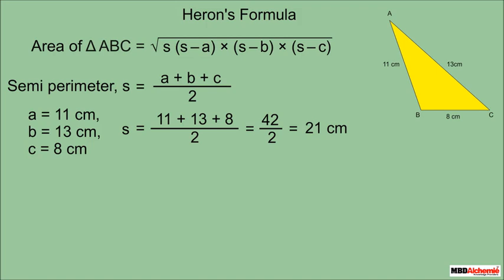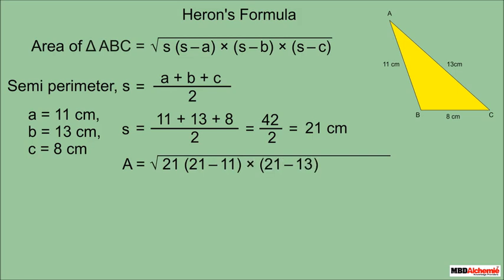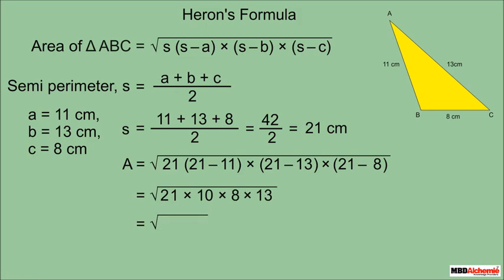Now we apply the formula: the area equals the square root of 21 × (21 − 11) × (21 − 13) × (21 − 8), which simplifies to the square root of 21 × 10 × 8 × 13. This equals the square root of 21,840, which is approximately 147.78 cm². In this way we can easily find the area of any scalene triangle.